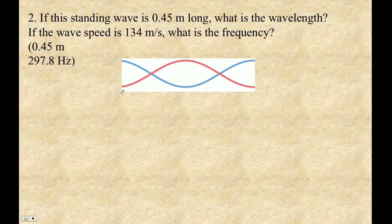This standing wave here is 0.45 meters long, so we're saying that this distance here is 0.45 meters. What is the wavelength, and if the wave speed is 134 meters per second, what's the frequency?